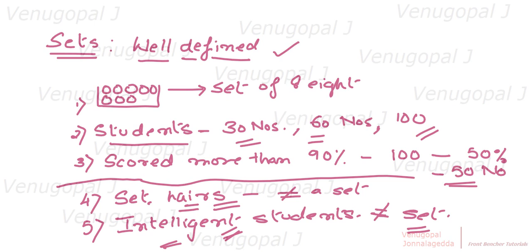Now let's continue with how we can actually define a set. There are two methods: the listing method, also called the roster method, and another one is the rule method, also called the set-builder form. We'll cover these in the next lesson. Thank you, bye.